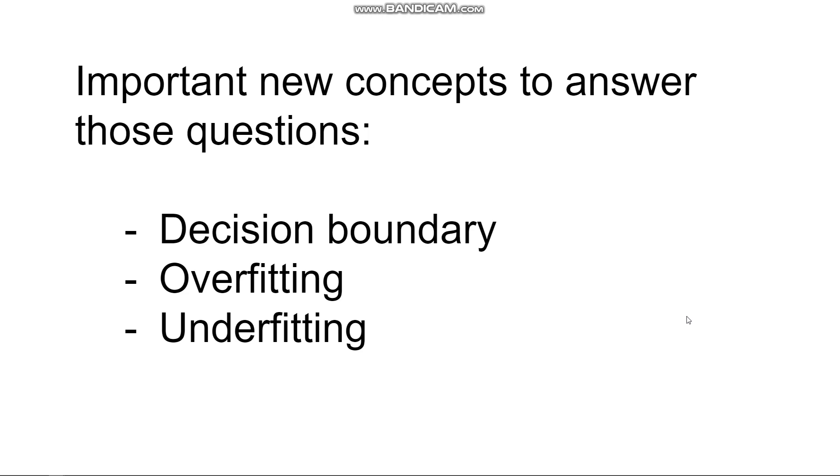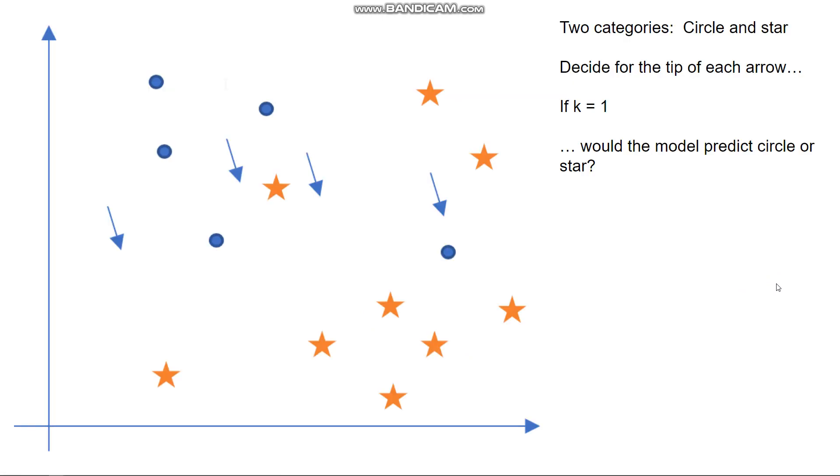So three important new concepts to answer those questions. The idea of a decision boundary, the idea of overfitting and the idea of underfitting. And like I said before, these are going to come back again and again as you study more machine learning. So at this point you should have a handout and we're going to do the handout in a couple of sections.